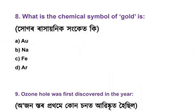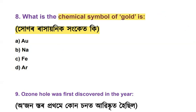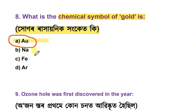Question number 8: What is the chemical symbol of gold? Options include hydrogen (H), aluminum (Al), and others. Au is gold. Na is sodium, Fe is iron, Ar is argon. The answer is option A — Au.